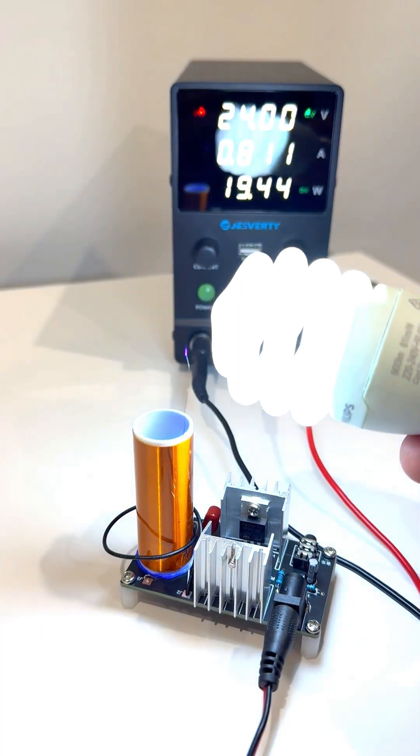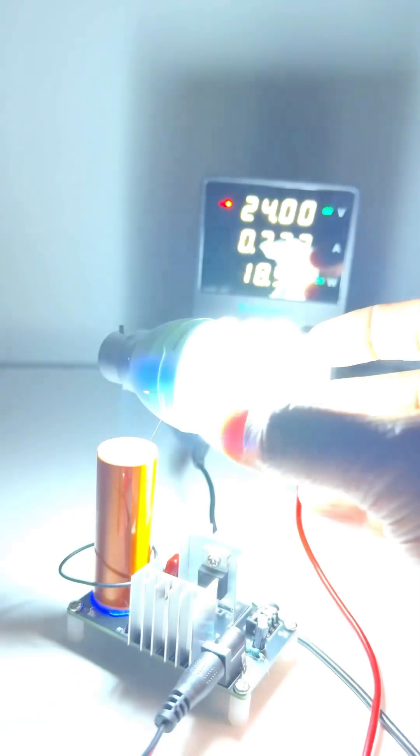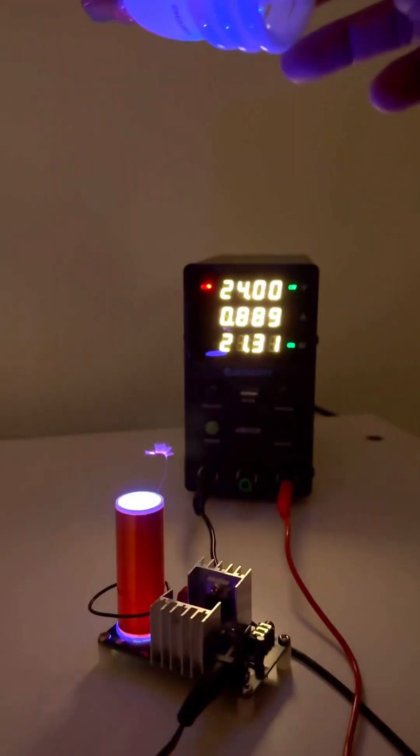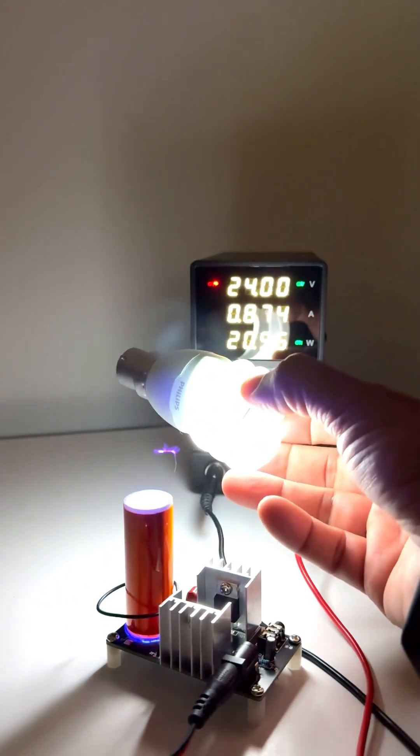But warning, this involves high voltage, so always use adult supervision and follow proper safety precautions. That's your DIY Tesla coil in just 60 seconds, science with sparks. Thanks.